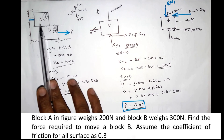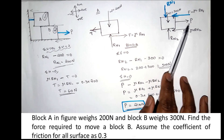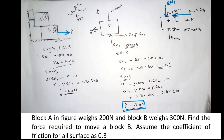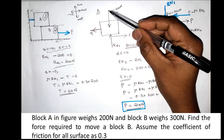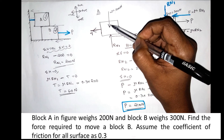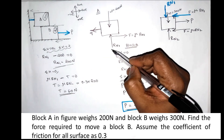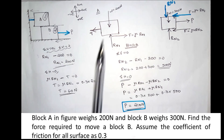To summarize: we have two blocks and we apply the free body diagram to each block separately. We apply equilibrium equations to each block, identify all external forces, and account for contact surfaces. At each contact surface we apply the normal reaction and friction force.